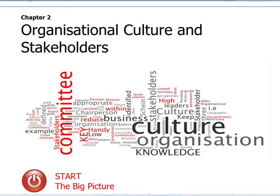Hello and welcome to this video from the EXP group for ACCA paper F1 Accountant in Business. Today we're going to be looking at Chapter 2 of our Express Notes, which can be obtained free of charge from our website. This chapter looks at organisational culture and stakeholders. Looking at the word cloud, you'll see some key words here, including culture. We're also going to be looking at what is known as a committee, and we bring in stakeholders as well.